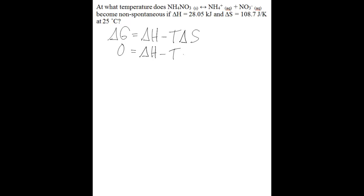You plug in your delta H value, you plug in your delta S value, which you're given in this problem, and you solve for temperature. And the reason you plug in zero for delta G is because you know that when delta G is greater than zero or positive, then your reaction will be non-spontaneous.